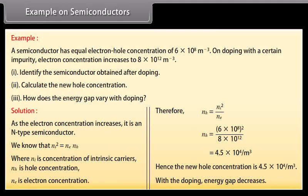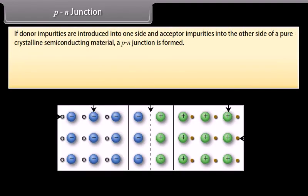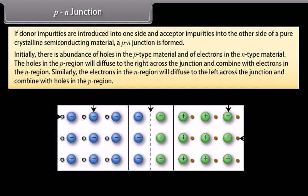With doping, the energy gap decreases. P-N junction: if donor impurities are introduced into one side and acceptor impurities into the other side of a pure crystalline semiconducting material, a P-N junction is formed. The donor ion is indicated by a positive sign because after the impurity atom donates an electron, it becomes a positive ion. The acceptor ion is indicated by a minus sign because after this atom accepts an electron, it becomes a negative ion. Initially, there is an abundance of holes in the P-type material and electrons in the N-type material. Holes in the P-region diffuse to the right across the junction and combine with electrons in the N-region.